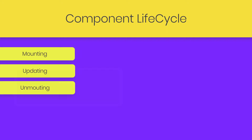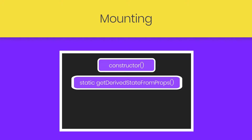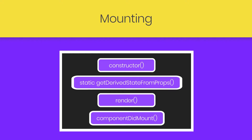Let's start with the first phase: mounting. When the component is mounted in the UI, React calls several methods. It will first call the constructor, then React will call the static method getDerivedStateFromProps, then call the render method, and then call componentDidMount. In this example, I'm going to cover constructor, getDerivedStateFromProps, and the render method.